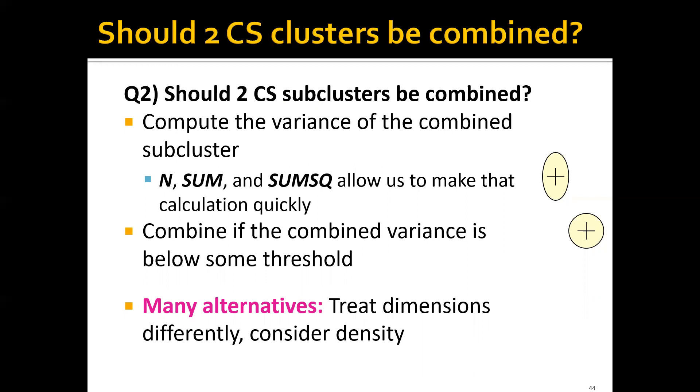Of course, you can have many alternatives. For example, if you want to treat dimensions differently, you can calculate the variance in some of the dimensions and ignore the others. Or you can also consider density of the combined clusters rather than the variance.